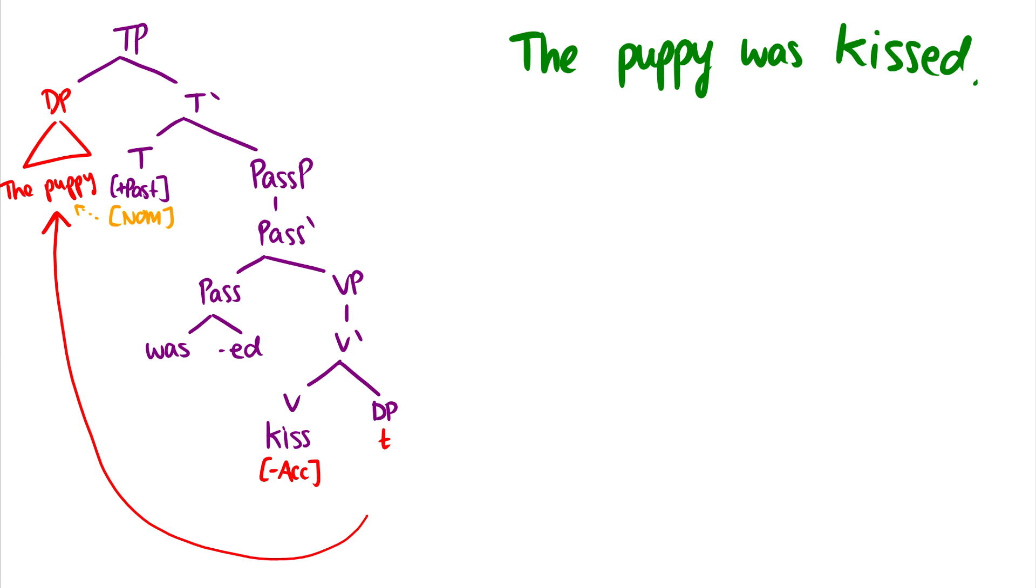And of course, another important thing that I haven't mentioned yet is we have this passive phrase in the tree. So passive phrase, pass P, pass bar goes into passive and a VP. And of course, this pass carries the passive morphology that goes down to kiss to make it kissed. And of course, we also have was here, which moves up to T to get tense.